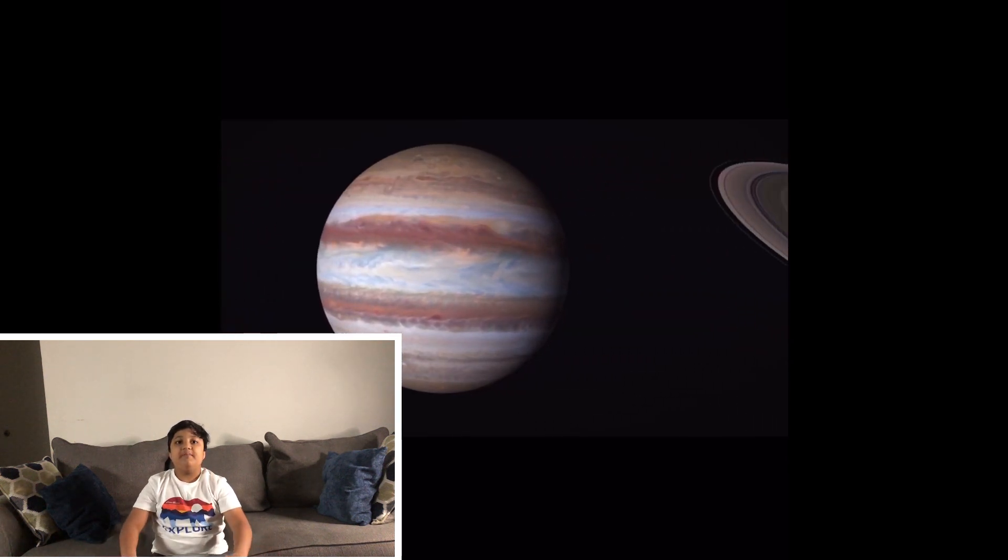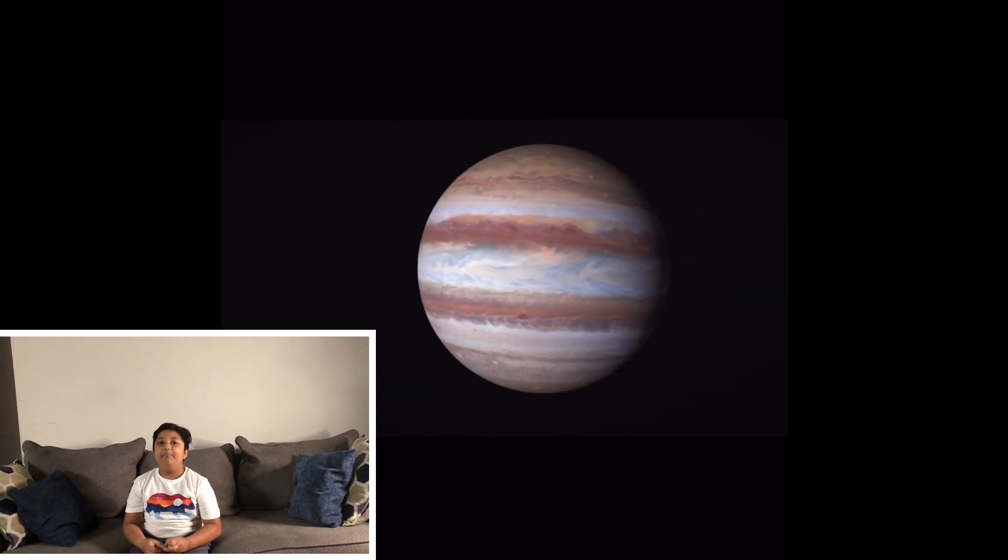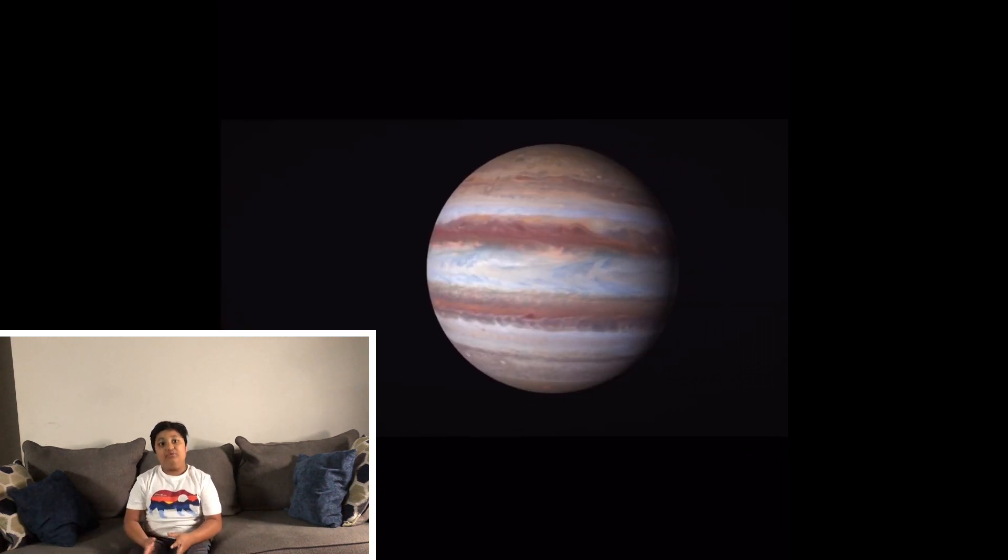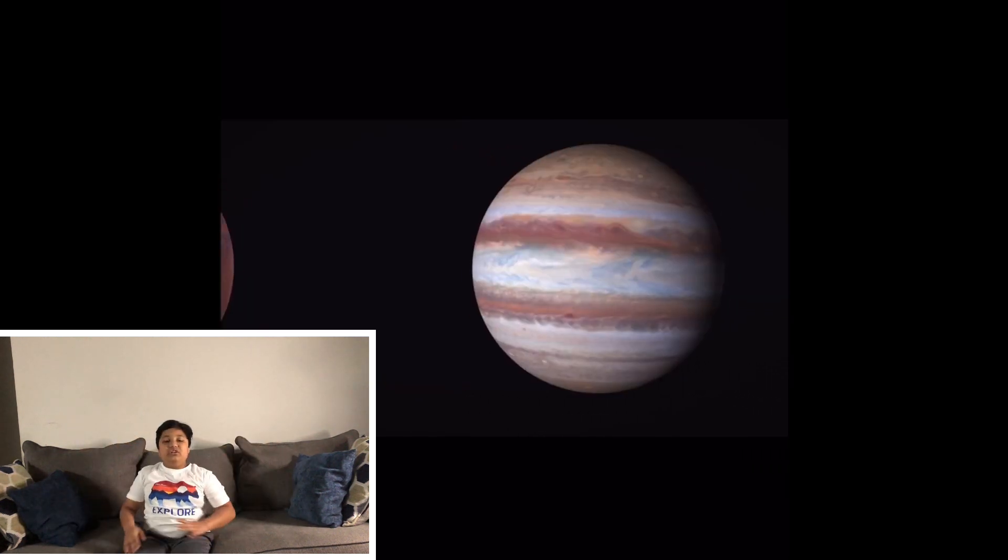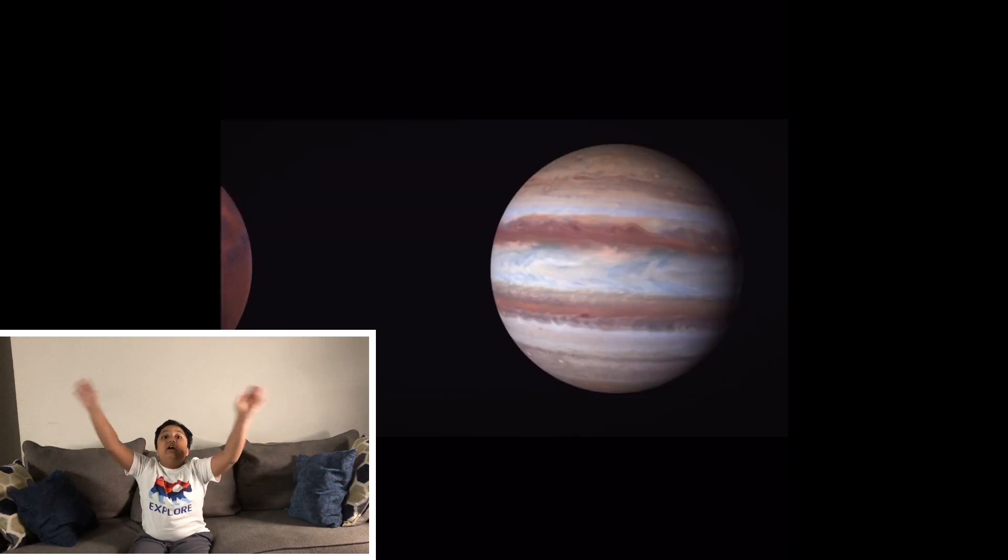Jupiter has the biggest, the largest storm. It is called the Great Red Spot and it can be seen from Earth. It's so huge that the whole Earth can fit in it.